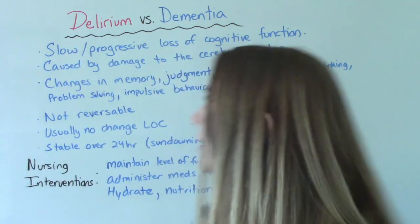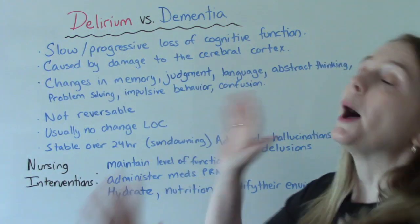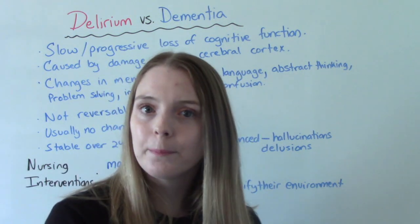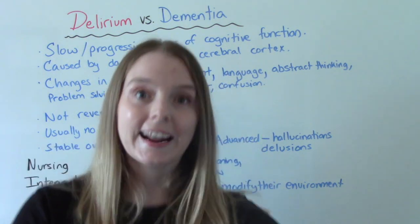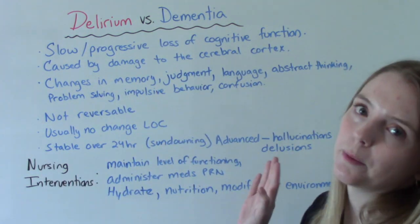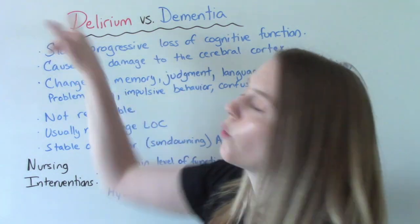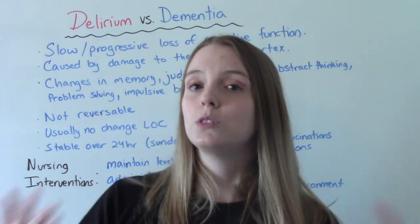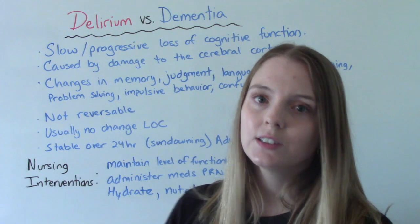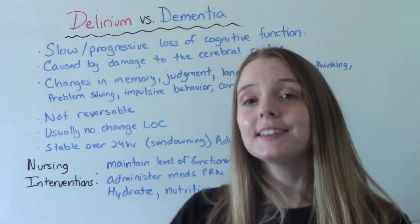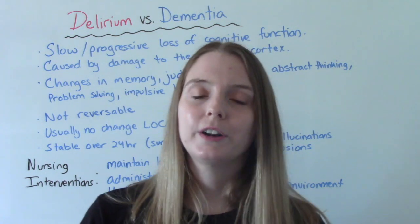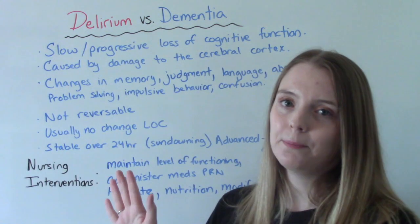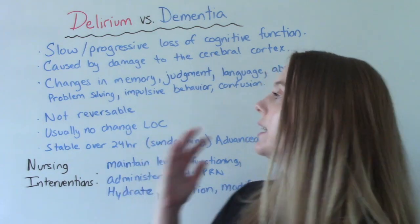One important point: a patient with dementia can also experience delirium. That's a problem because many people don't catch it — they see the dementia diagnosis and stop assessing for delirium. Think about a dementia patient who gets a UTI and is now experiencing an acute episode of delirium. They still deserve appropriate assessment and treatment for that delirium — it should not be overlooked.